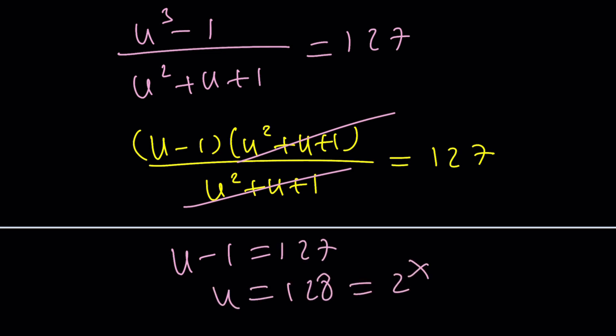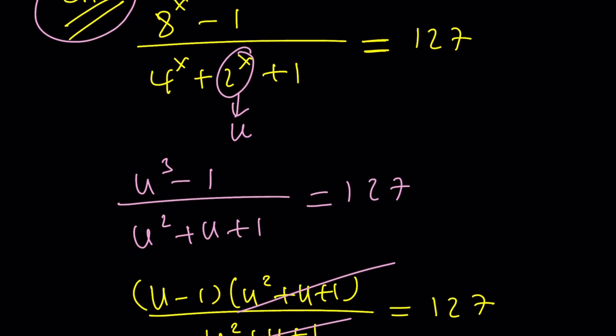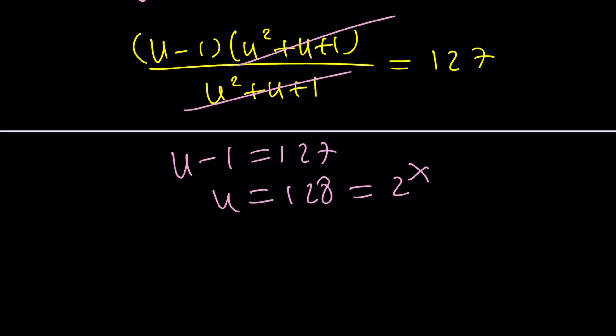And then something happens, mathemagic happens. We can cross out these two terms. We end up with U - 1 = 127, and U = 128. But wait a minute, U is 2^x. U are, no, you're not 2^x. U is 2^x. And from here, we get x equals 7.